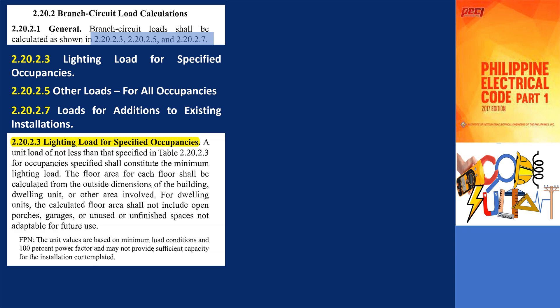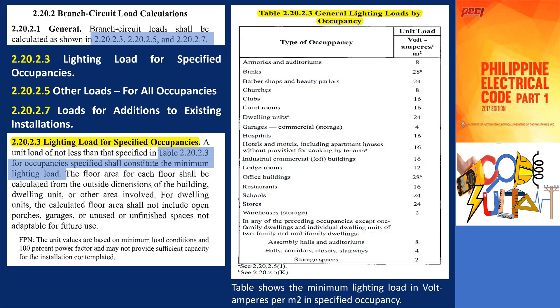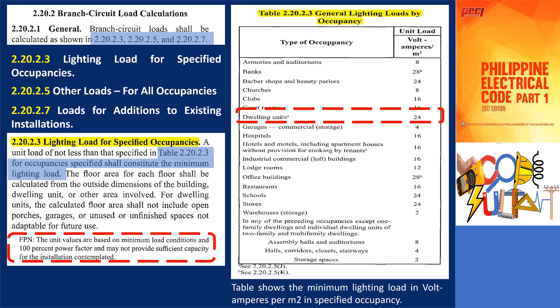What are the rules for lighting load for specified occupancies? Section 2.20.2.3 states that a unit load of not less than that specified in table 2.20.2.3 for occupancies specified shall constitute the minimum lighting load. The lighting load for dwelling units is 24 volt amperes per square meter. This includes receptacle outlets covered in subsection 2.20.2.5j.